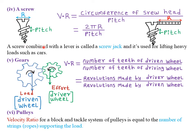When a screw is combined with a lever, we call it a screw jack. A screw jack is used for lifting heavy loads, for example, cars, lorries, or other heavy machines. A screw jack is simply a screw that we have added a lever on it.